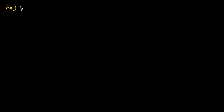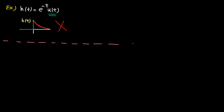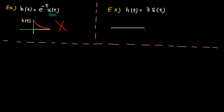Example: H(t) is given. The unit step is 0 for t < 0 and 1 after that. The exponential function multiplied by the unit step looks like this. As you can see, H(t) is not zero for many values of t, so the system is not memoryless. Second example: H(t) = 3δ(t). This function is only non-zero at the origin with amplitude 3, so this system is memoryless.